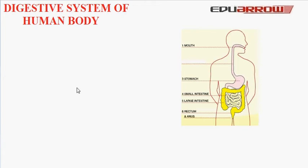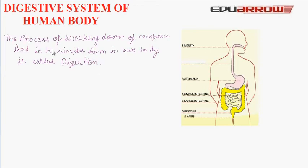The food that we eat cannot be used by our body as such. So, the complex food is broken down into its simpler form in our body. The process of breaking down food into simpler form in our body is called digestion.